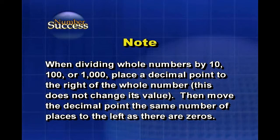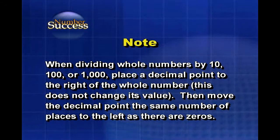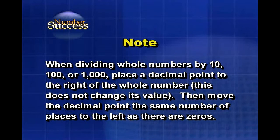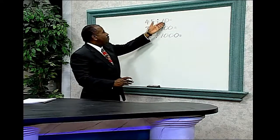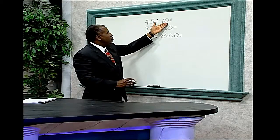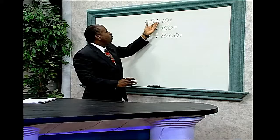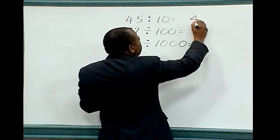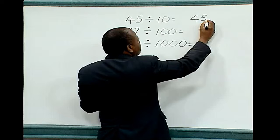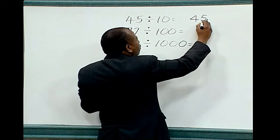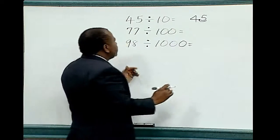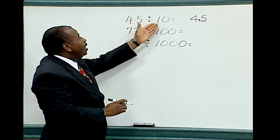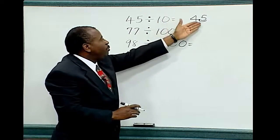When dividing whole numbers by ten, one hundred, or one thousand, place the decimal point to the right of the whole number — this does not change its value. Then move the decimal point the same number of places to the left as there are zeros. For example, forty-five divided by ten: the ten contains one zero, so the decimal point must be moved one place to the left. Forty-five — the decimal point is understood to be located behind the five. Move it one place to the left, erase the original decimal point. Therefore, forty-five divided by ten is equal to four point five.